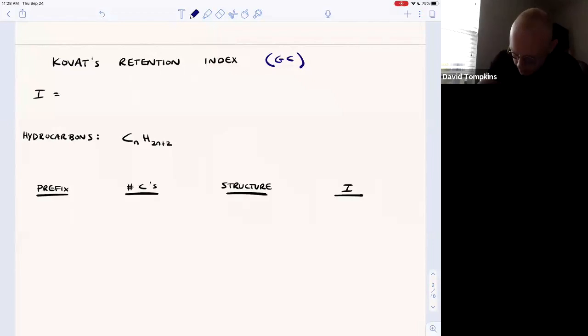I is going to be equal to 100 times N, where N is the number of carbons in a straight-chain hydrocarbon known as an alkane.